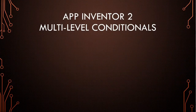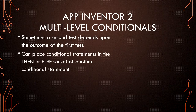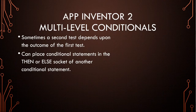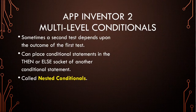We can also have multi-level conditionals — a test within a test. We do that by putting one complete if-then or if-then-else block inside the then-or-else socket of an outside one. This is called nesting conditionals. It's called nesting — think about Russian nesting dolls, where you have one big doll, you open it up and there's another little doll inside. You open that one and there's a smaller one, and smaller one, until you get to a very tiny one. They all fit inside each other, and that's how nested conditionals work.